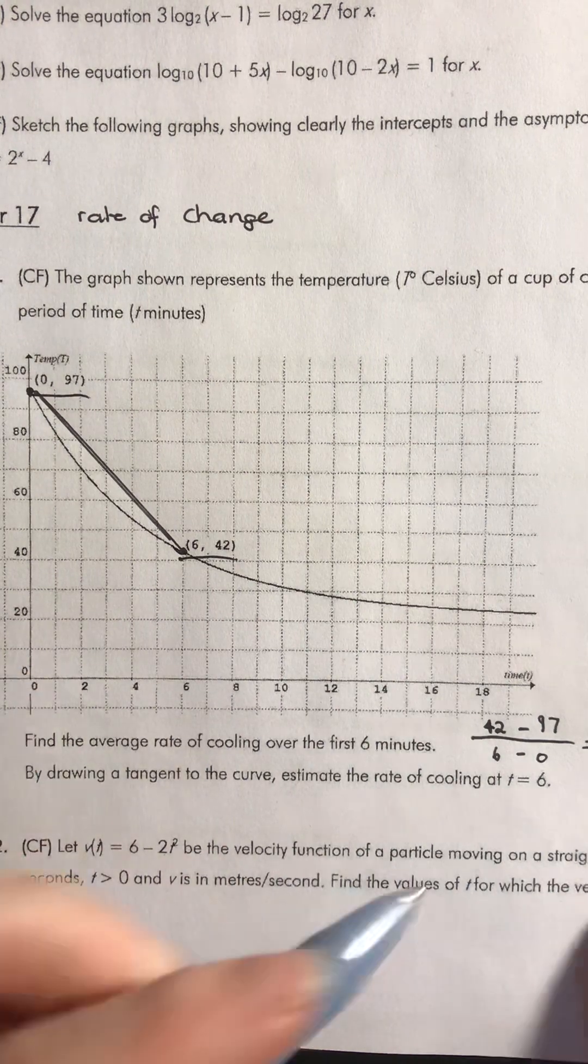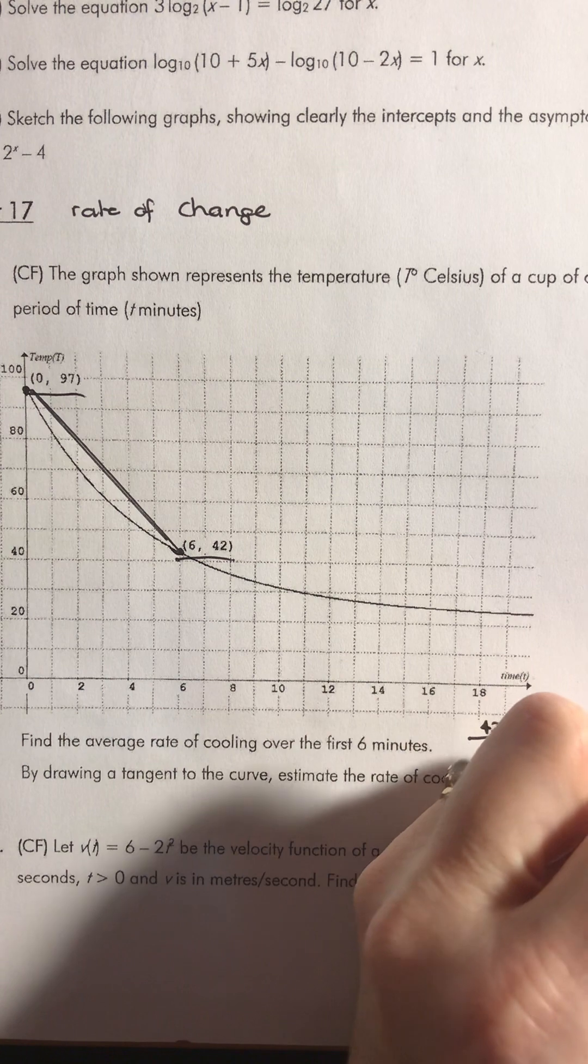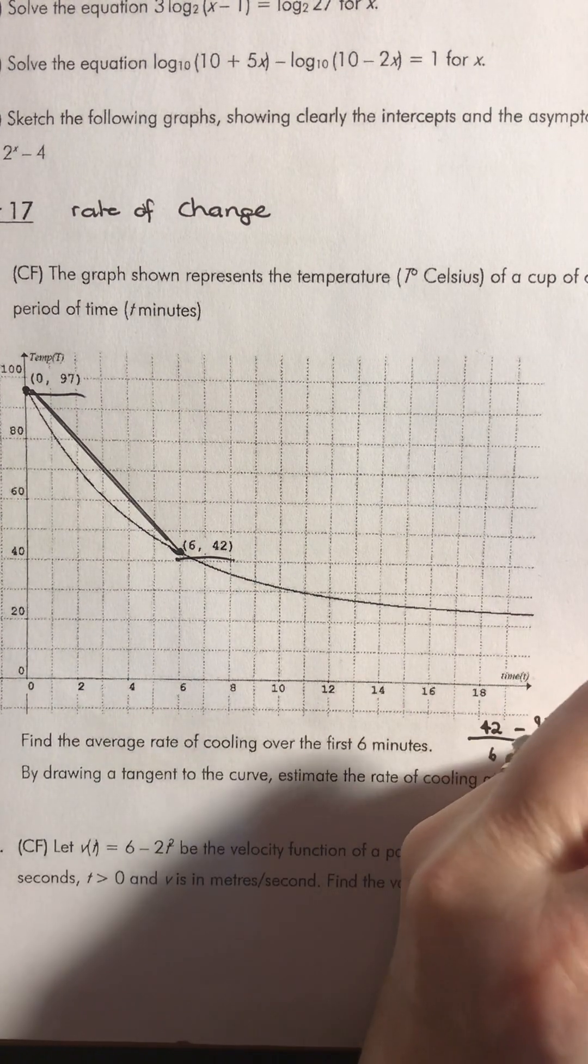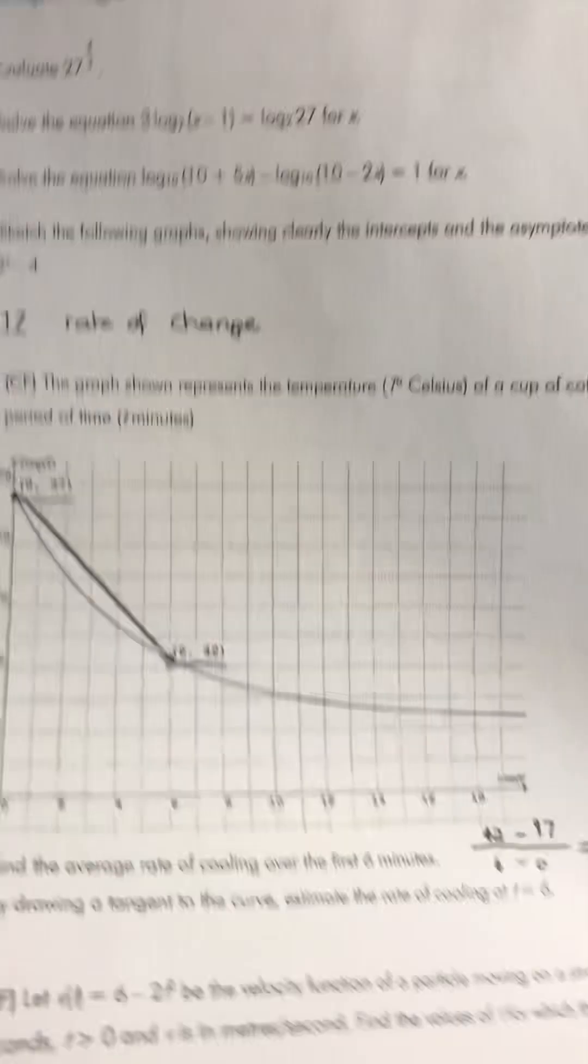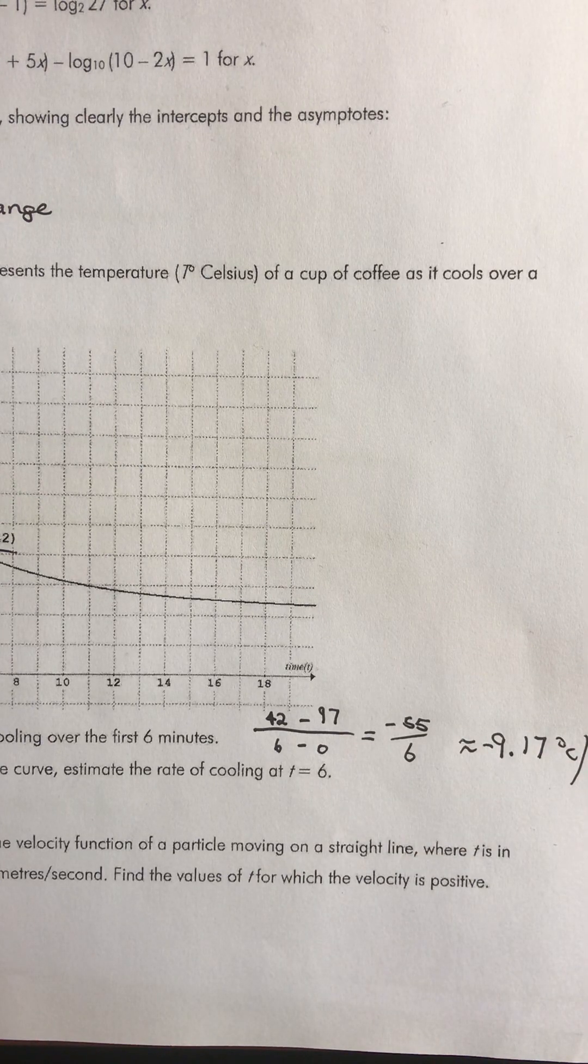So we get negative 9, and I can change that to a fraction if I want, or I can just round it to approximately negative 9.17, and that will be degrees Celsius per minute. So that's our answer there. We can do that or we can change that to the fractional form.